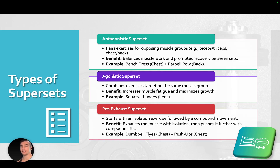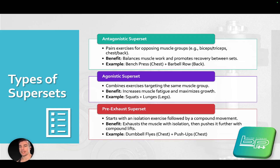There are various types of supersets. The first is the antagonistic superset, which pairs exercises for opposing muscle groups — like biceps and triceps, or chest and back. The benefit is it balances muscle work and promotes recovery between sets. An example would be a bench press targeting the chest paired with a barbell row targeting the back.